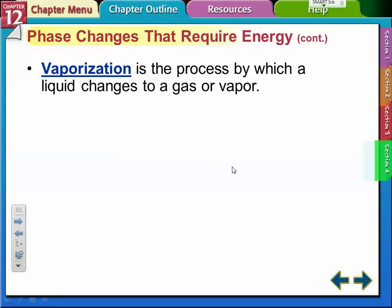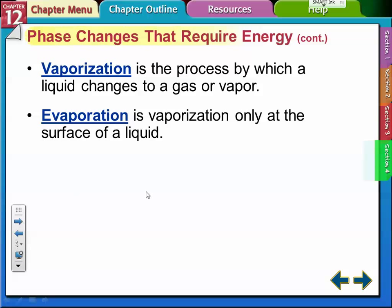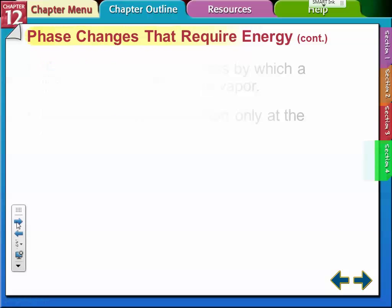Vaporization is the process by which a liquid changes into a gas or vapor. Evaporation only happens at the surface of a liquid. Vaporization is when the whole liquid has enough energy to change into a gas. Evaporation just happens at the surface of a liquid.